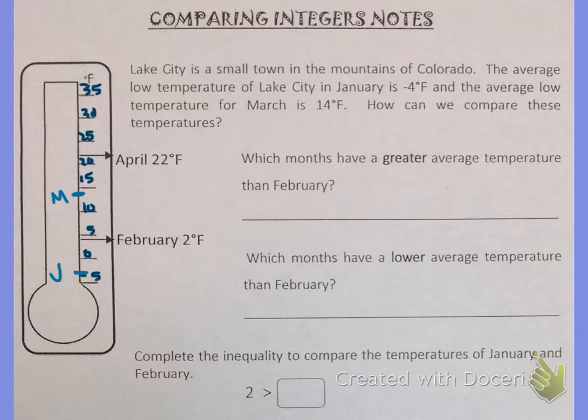So if we look now which months have a greater average temperature than February, that would be anything above February. So anything up this way is greater than February. And that would be March and April.